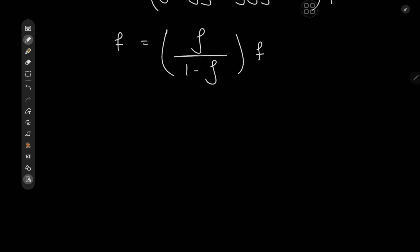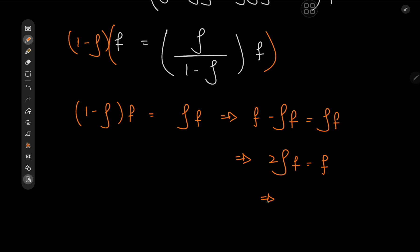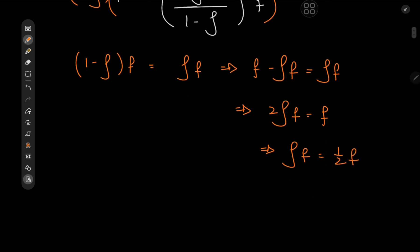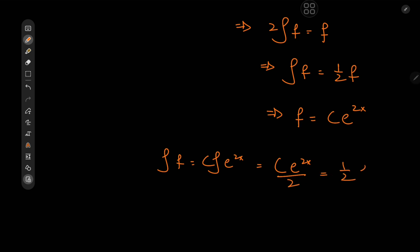Now this thing looks even more exotic than the equation we started with, but we can work with it. We'll expand using 1 minus the integral operator, where 1 here is the identity operator. So we have (1 minus the integral) of f equal to the integral of f, which implies that f minus the integral of f equals the integral of f. This further implies that twice the integral of f equals f, which means we have the integral of f equal to 1/2 of f — which is of course solved by an exponential function. Specifically, f equals some constant c times e to the 2x. We can verify: integrating f gives c times e to the 2x over 2, which is indeed 1/2 of f.